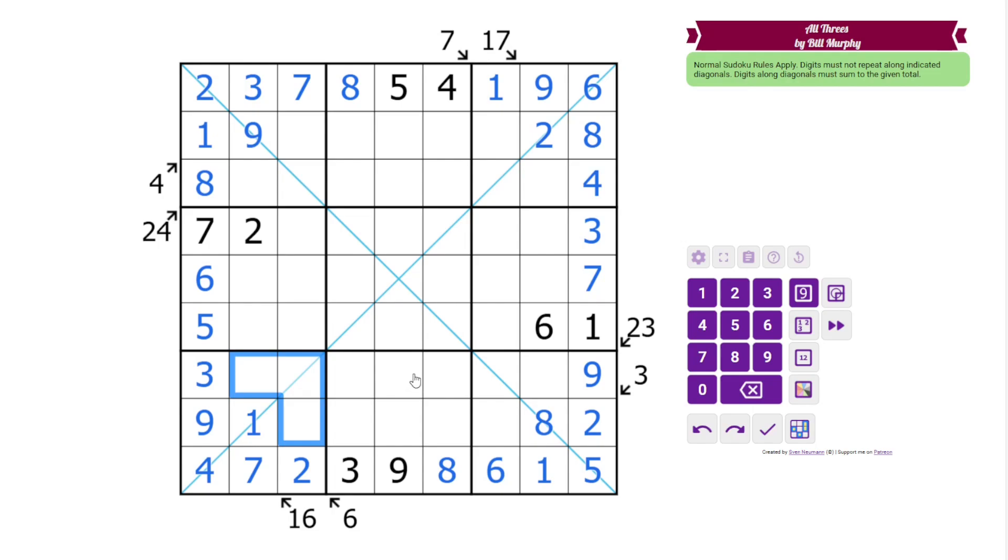All right, in the boxes, we need 5, 6, 8 here. 6 can't go in the diagonal. And 8 can't go there. These are 4, 5, 6. These can't be 4, so that's our 4. Now we have a 5, 6 pair, so this is 8. We have a 5, 6 pair in this column as well. This is 4, 8. And this is 1, 3, 9.